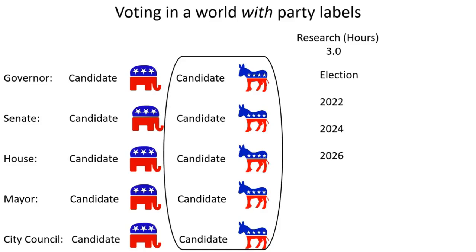And in 2026, 2028, and 2030. All they have to do is periodically make sure that the parties haven't changed their bundles — which they do sometimes, but not very often. As long as they're monitoring things and making sure the Democrats still believe in the Democratic bundle and the Republicans in the Republican bundle, it winds up being very easy to vote in a world with party labels if a citizen has a preference for one bundle over the other.